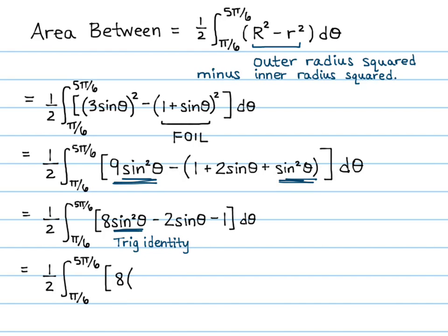Now I'll use the trig identity for sine squared theta. The integral becomes one half times the integral from pi over 6 to 5 pi over 6 of 8 times the quantity one half minus cosine 2 theta over 2, minus 2 sine theta minus 1, all times d theta.